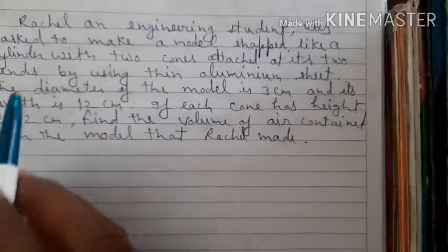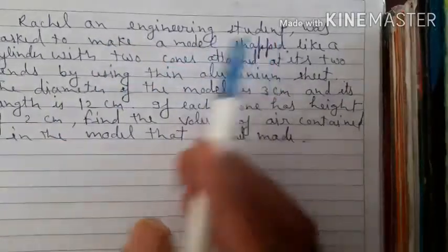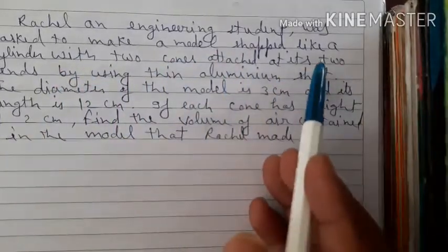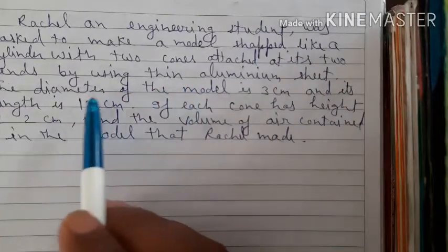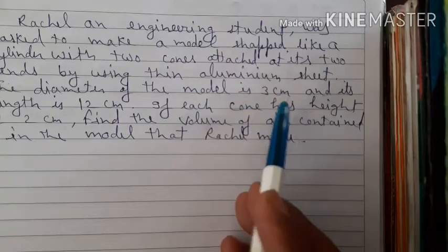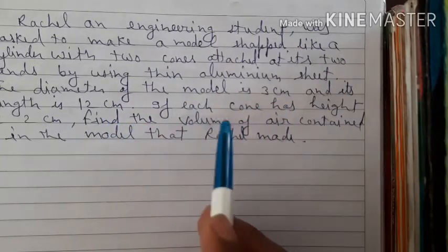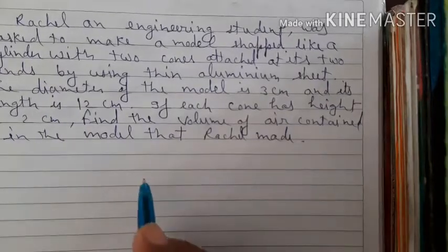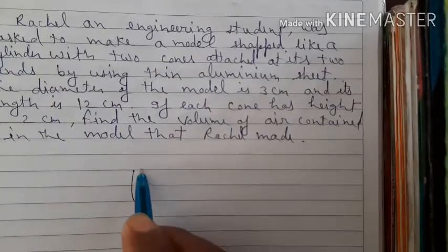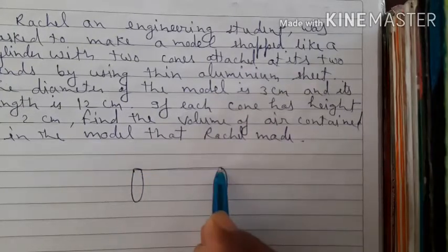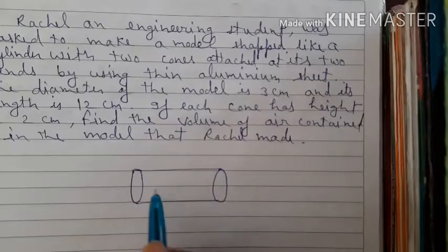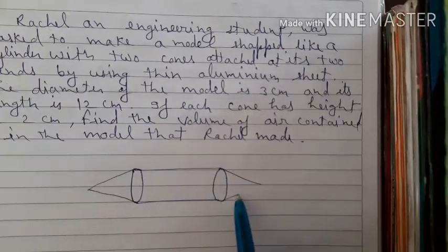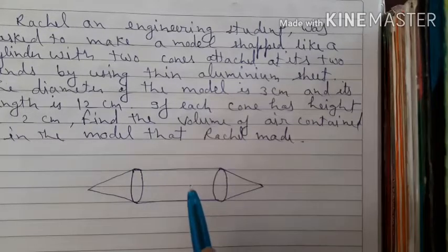In question number 2, Rachel, an engineering student, was asked to make a model shaped like a cylinder with two cones attached at its two ends using aluminum sheet. Rachel has made a model like this — it is in the shape of a cylinder with a cone on each end.